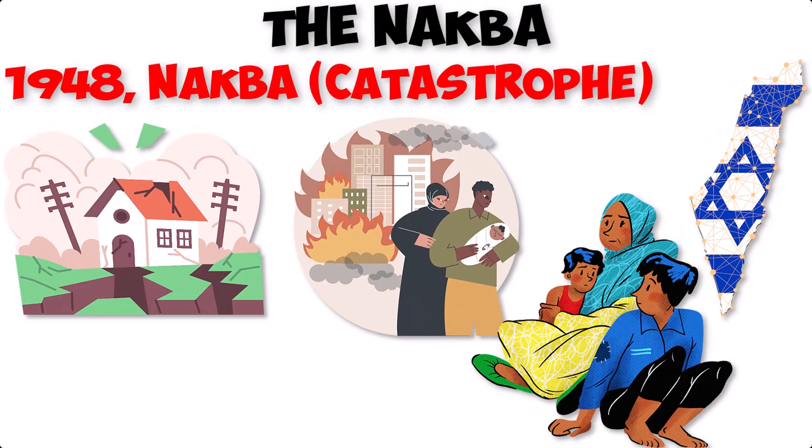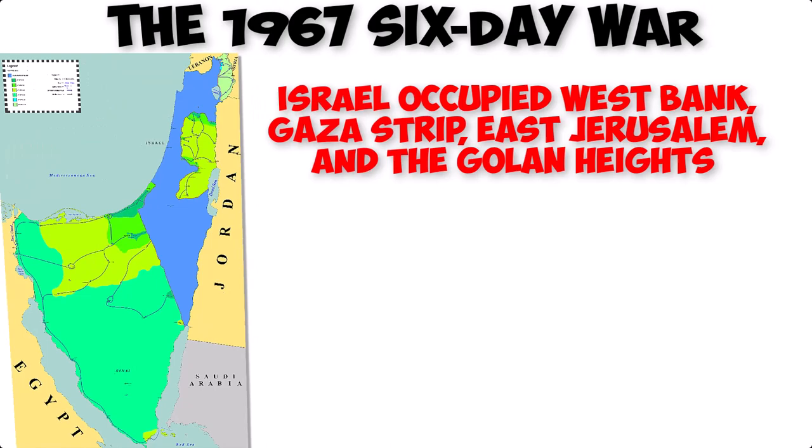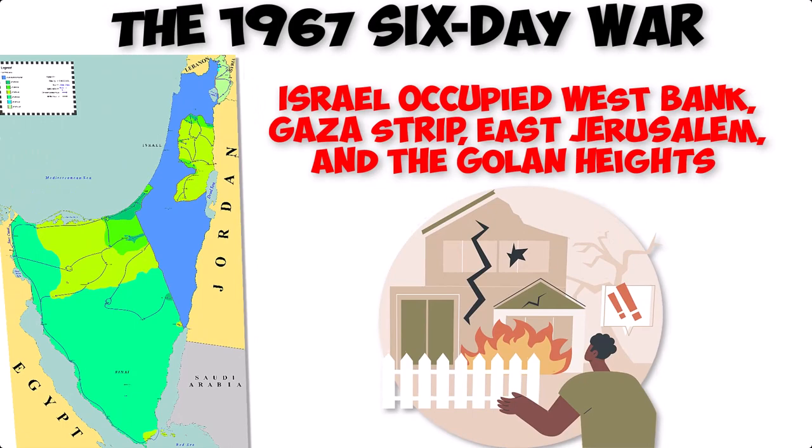Khalidi analyzes the 1967 Six-Day War, which resulted in Israel's occupation of the West Bank, Gaza Strip, East Jerusalem, and the Golan Heights. He discusses the lasting consequences of this war on the Palestinian territories and the region as a whole.